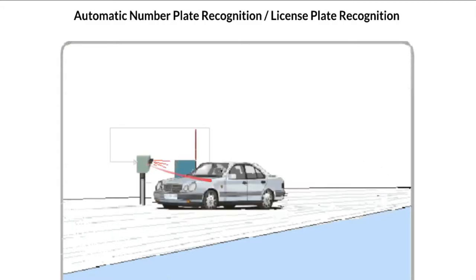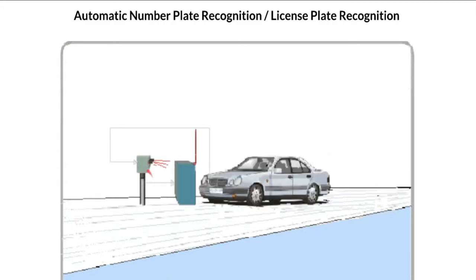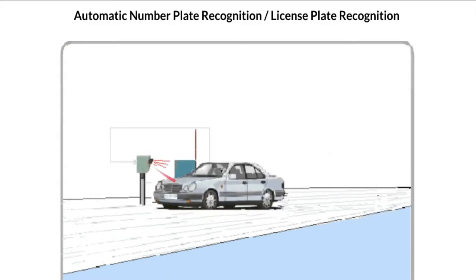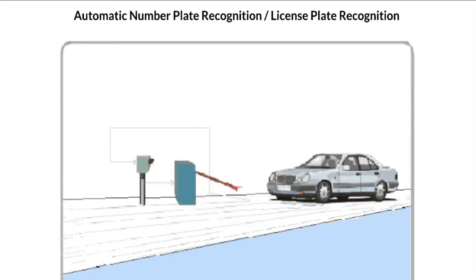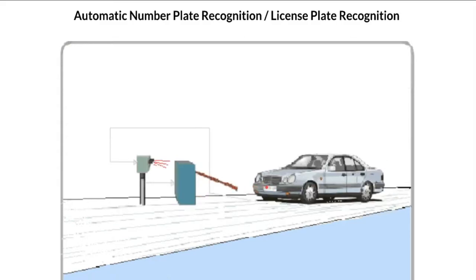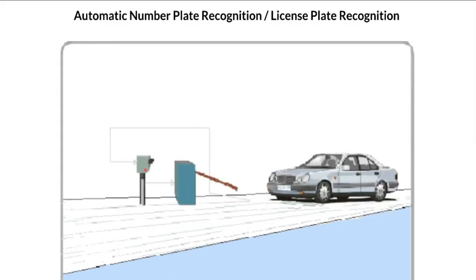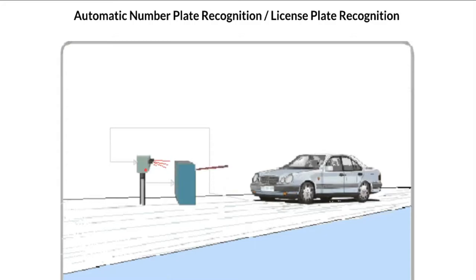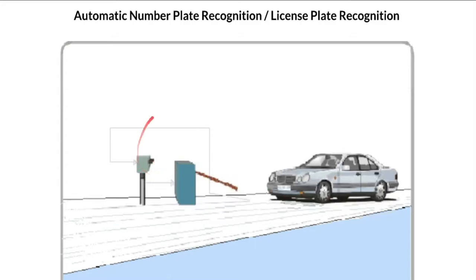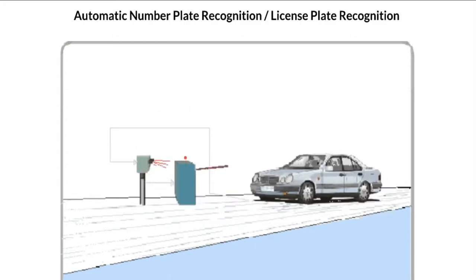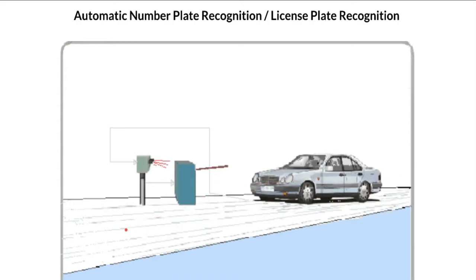Let's see how it works. The LPR software will already have predefined license plates stored. Whenever a vehicle approaches, it displays infrared light onto the license plate and takes a picture. Once the image is taken, it compares it with the predefined list of images.